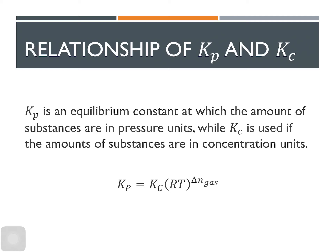In the previous video, we learned how to write the equilibrium expression K. If you have an aqueous system, you can write Kc for that chemical reaction. Kc is the equilibrium constant in terms of concentration. However, if you have a gaseous phase in your equilibrium system, you can write both Kc and Kp. Kp is the equilibrium constant in terms of pressure. Since you can write two K expressions for the same reaction, Kp and Kc should have a relationship, given by: Kp equals Kc times RT raised to delta n gas.